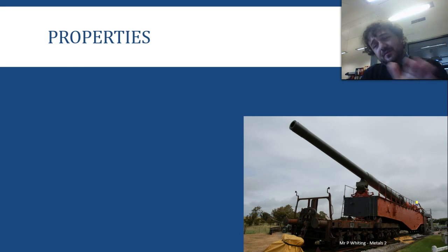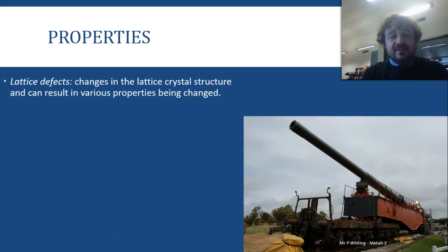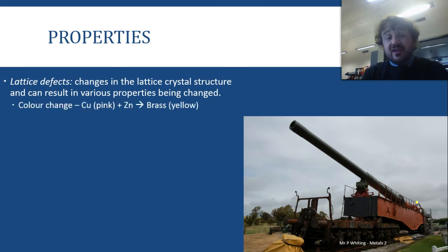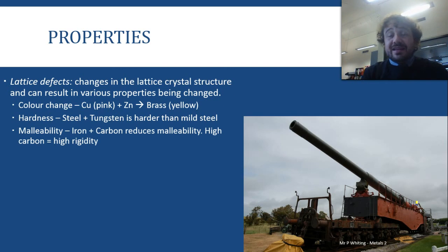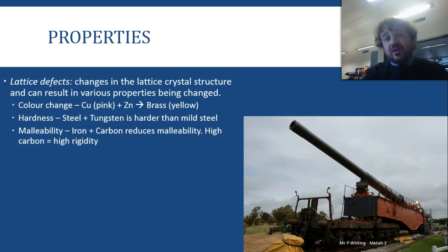These added elements change the properties of the metal, as we've seen with the phase diagram. What we're essentially creating are lattice defects — changes in the crystal lattice structure — and this is where the change in properties comes from. You can have a colour change: copper is a semi-pink colour, but add zinc and you get brass, which is yellow, even though neither copper nor zinc is yellow. Hardness changes too: steel plus tungsten makes it a lot harder than mild steel. We can also change malleability — carbon in steel is not malleable at all and snaps, so the more carbon, the lower the malleability, or the higher the rigidity.